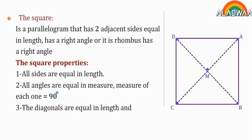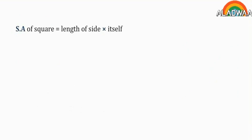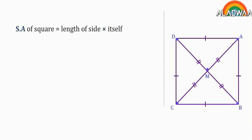Number 3: The diagonals are equal in length and perpendicular and bisect each other. Surface area of the square equals length of side times itself or half square of length of its diagonals.